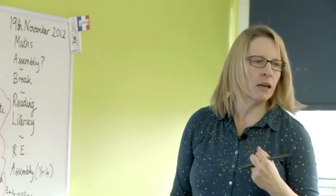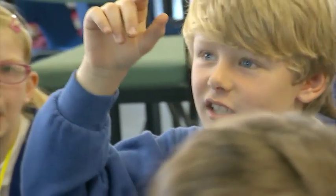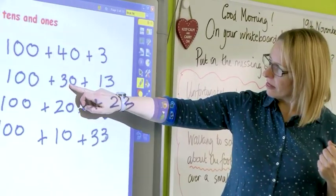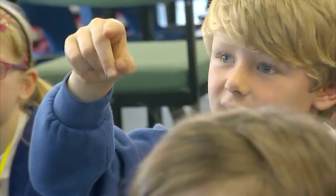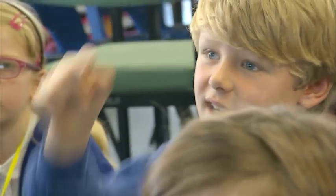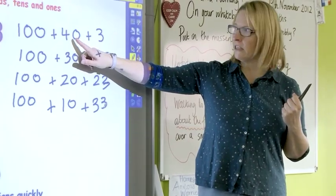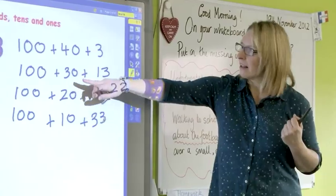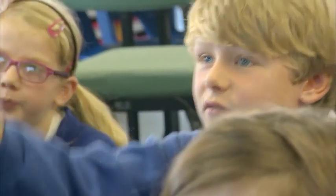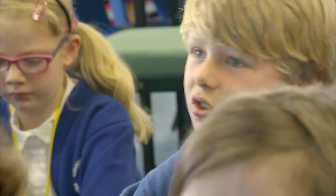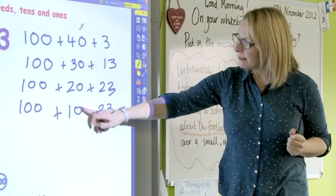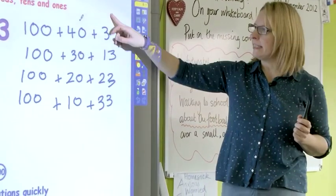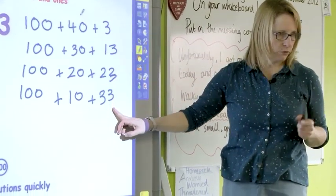You did a hundred add forty add three, and then you added 10 from the ones onto the tens — so the forty became thirty and the three became thirteen. He minused ten every time from the forty, thirty, twenty, ten, and added ten on to the units. So from the tens he subtracted a ten and added it on to the ones — to make that pattern.